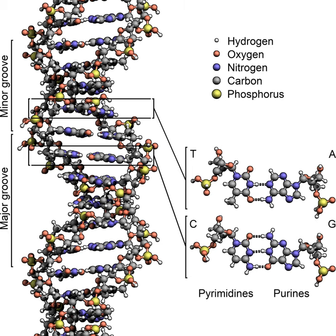Cell division is essential for an organism to grow, but when a cell divides it must replicate the DNA in its genome so that the two daughter cells have the same genetic information as their parent. The double-stranded structure of DNA provides a simple mechanism for DNA replication. Here, the two strands are separated and then each strand's complementary DNA sequence is recreated by an enzyme called DNA polymerase. This enzyme makes the complementary strand by finding the correct base through complementary base pairing and bonding it onto the original strand.